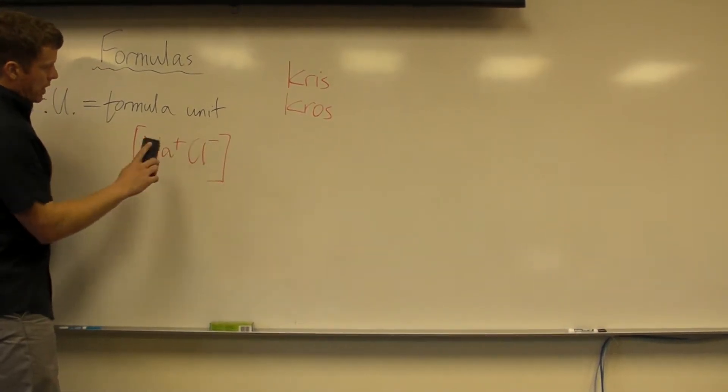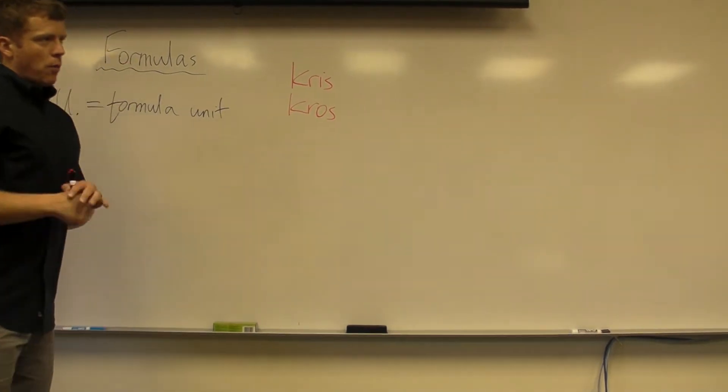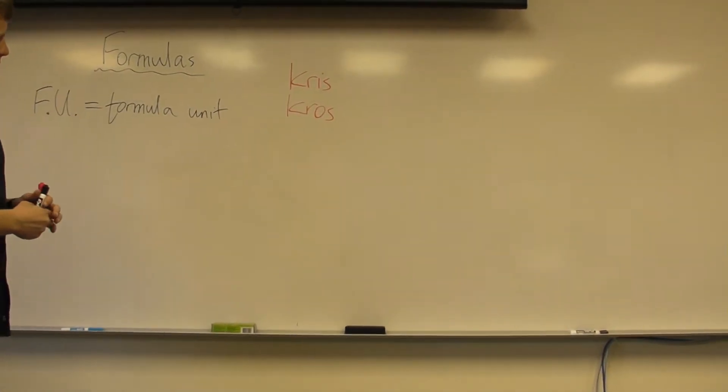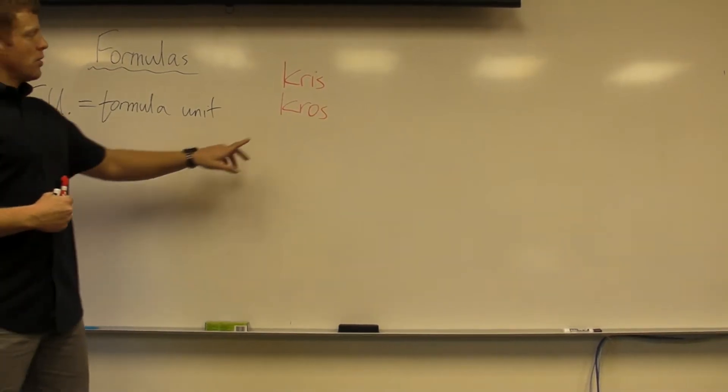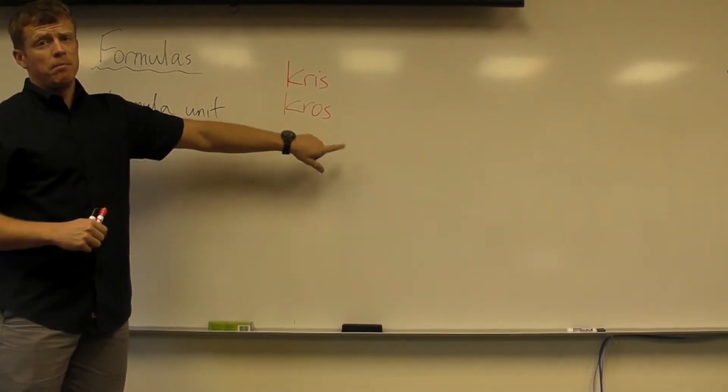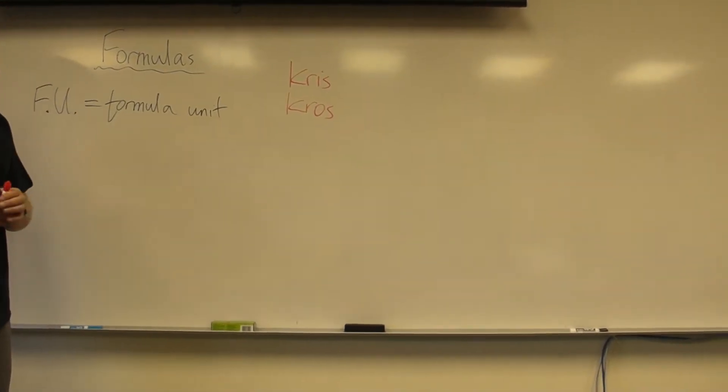So we looked at ionic bonding in the last video. And it's the idea of a positive and negative charge, cation and anion bonded together. We'll be using this concept of criss-cross, which if you know your rap from the early 90s, big rap band and we'll show you the video in class.